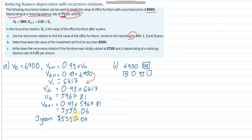So counting the iterations: once, twice, third, fourth, fifth. The value will first drop under $5,000 after five years.